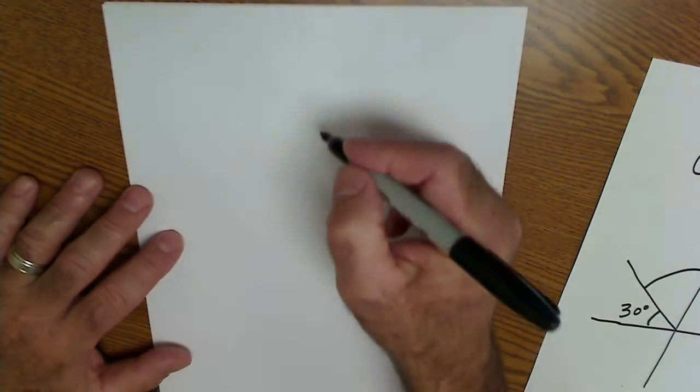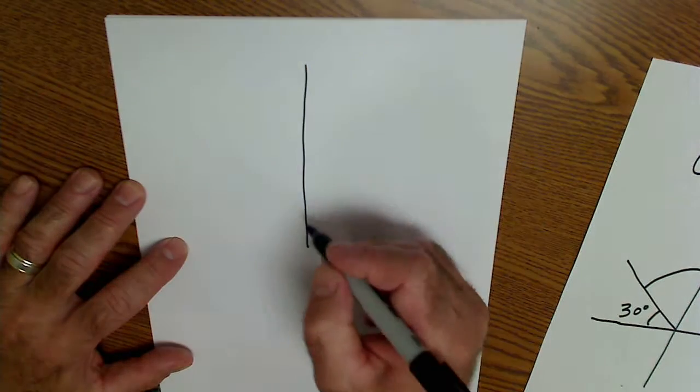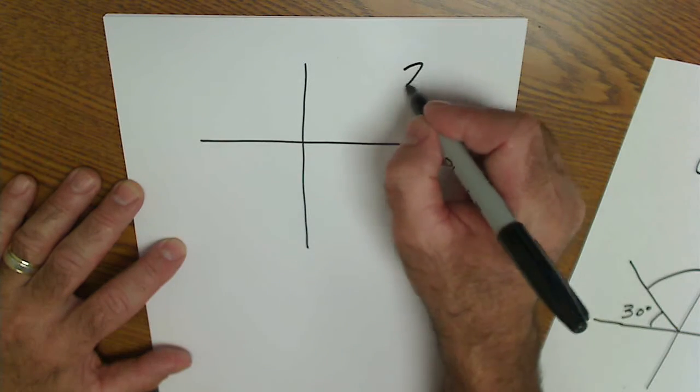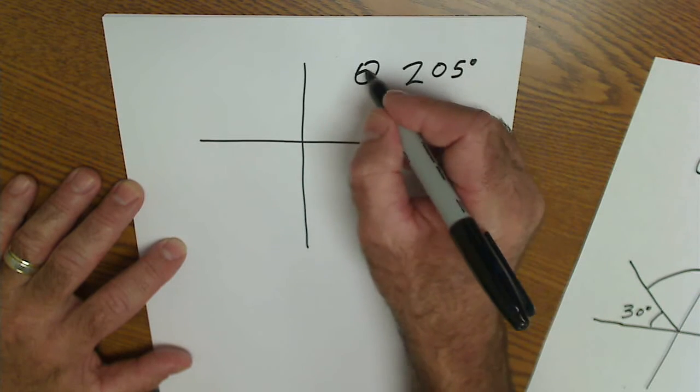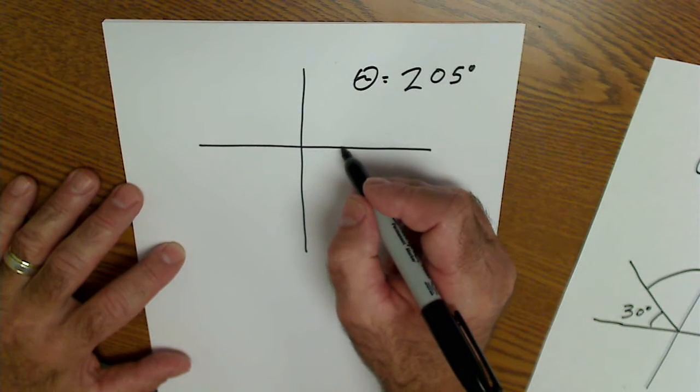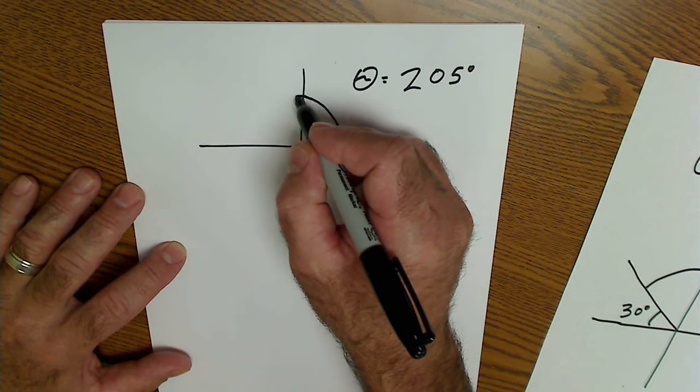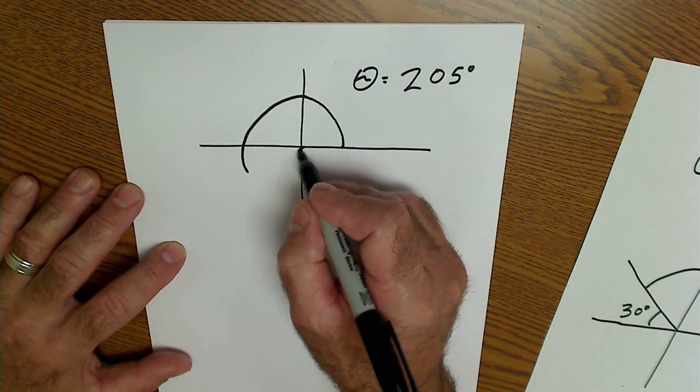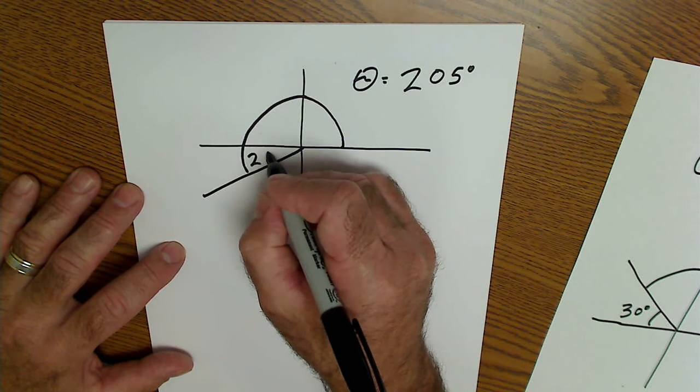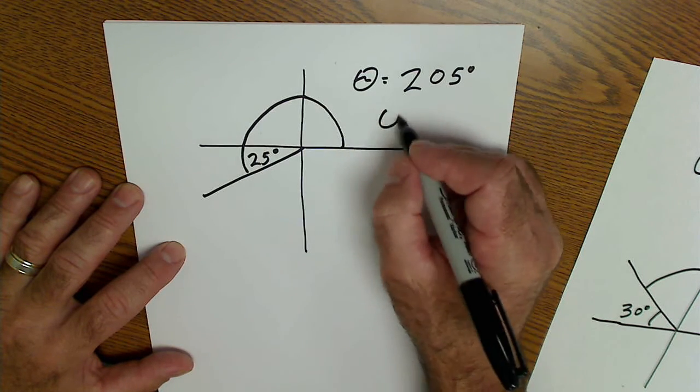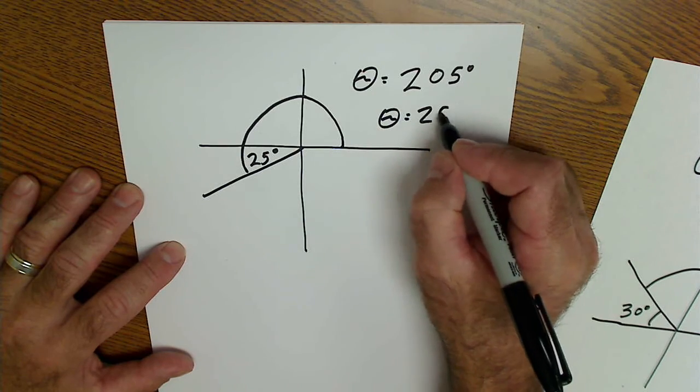Let's take a look at a third quadrant value. So let's say I have 205 degrees is theta. I start here. I rotate counterclockwise, 90, 180, 205. There's my terminal side. Back to the x-axis is 25 degrees. So my reference here is 25 degrees.